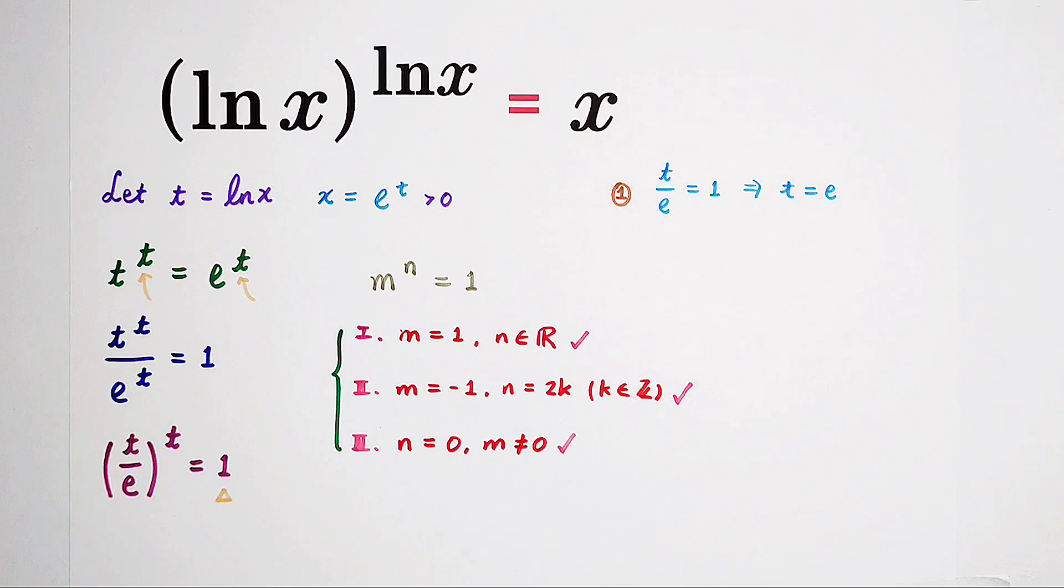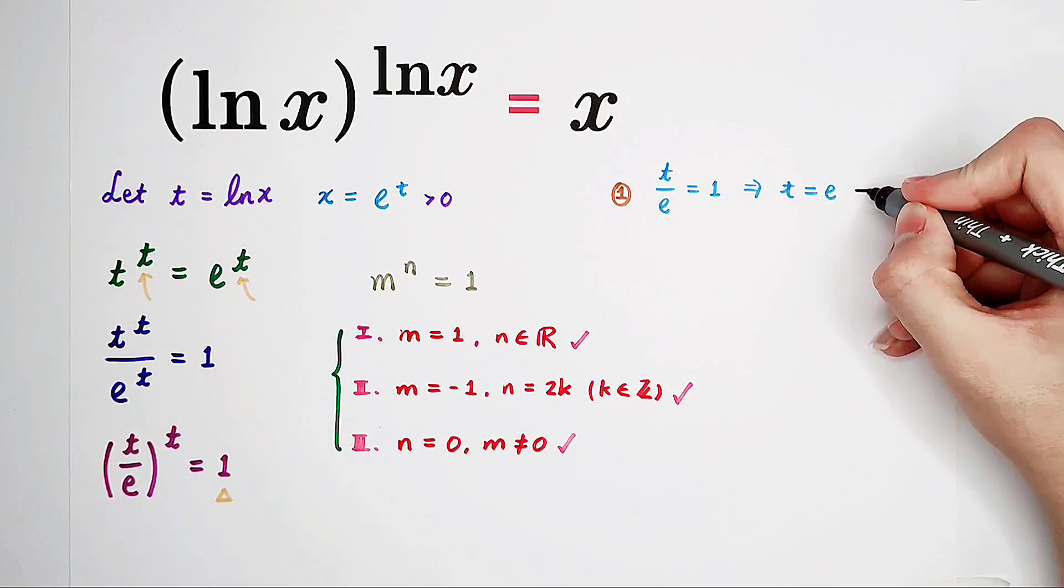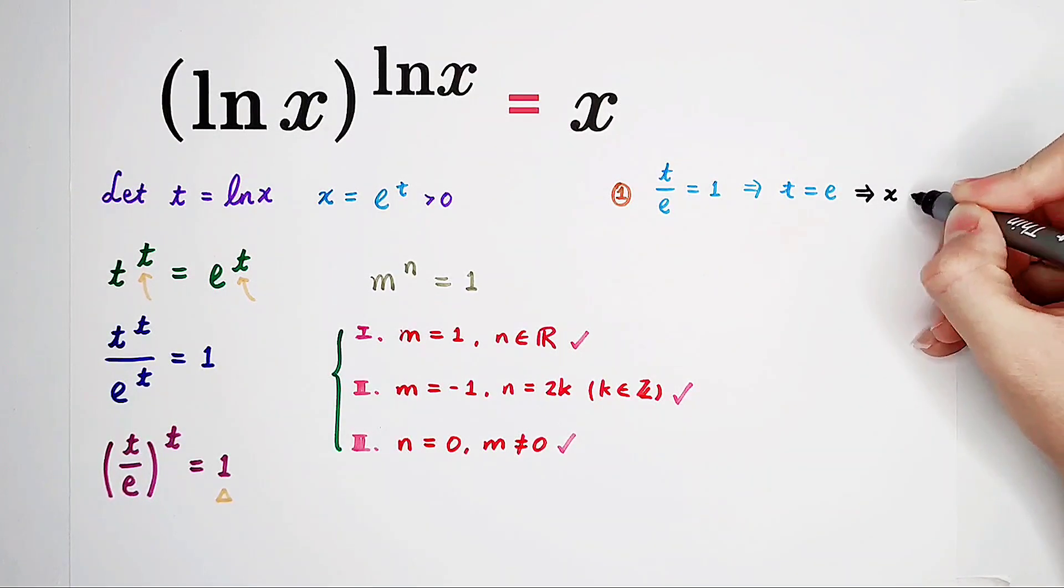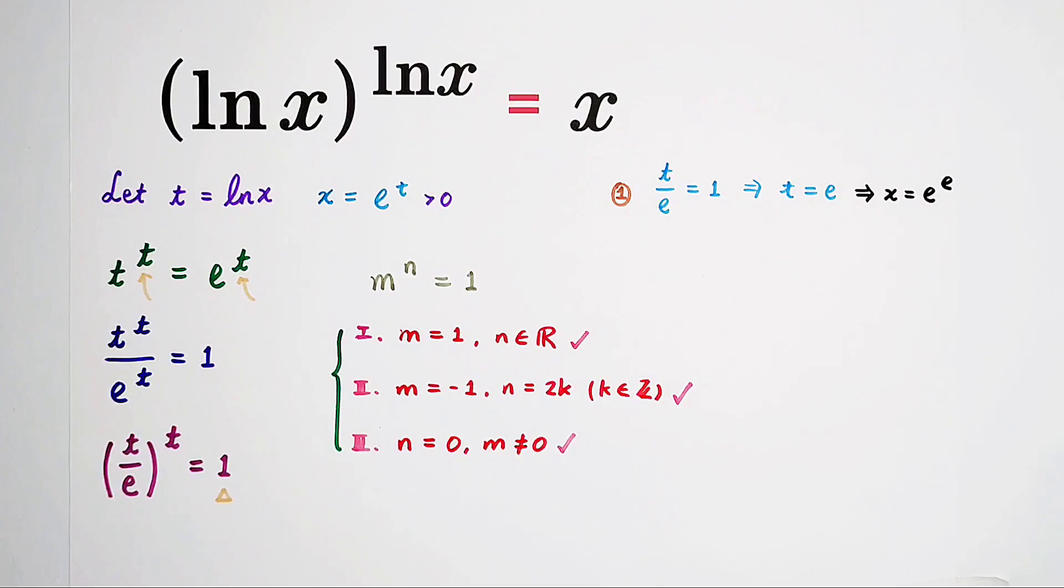What about x? We have to solve for x, not for t. Remember, we did a substitution, and we always have to solve for x, for the original variable. So here, we can get x is e to the power of t, e to the power of e.